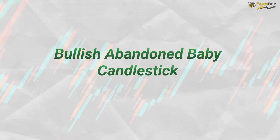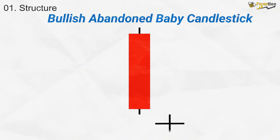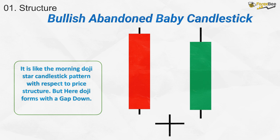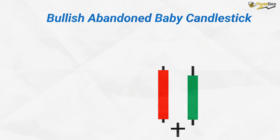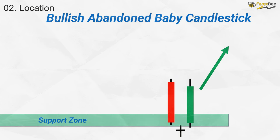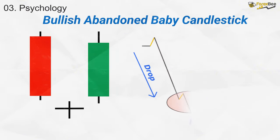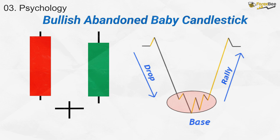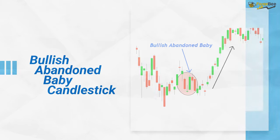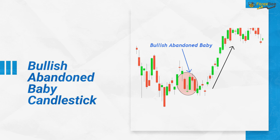Now, let's dive into the bullish abandoned baby candlestick pattern. This pattern consists of three candles and closely resembles the morning doji star, but with a crucial distinction: the doji candle in the middle opens and closes with a noticeable gap down. This pattern is considered a strong bullish reversal signal and typically forms at a key support or demand zone, indicating a potential shift in trend direction. The psychology is similar to a drop-base-rally demand zone, where bearish momentum is weakening, paving the way for a bullish reversal. In the example, we can clearly see the formation of the bullish abandoned baby, followed by a sharp trend reversal signaling the start of a new bullish move.